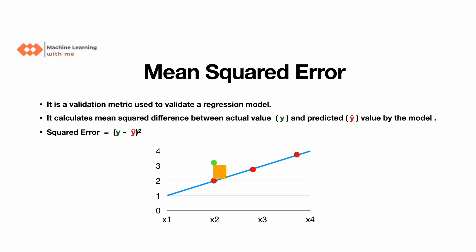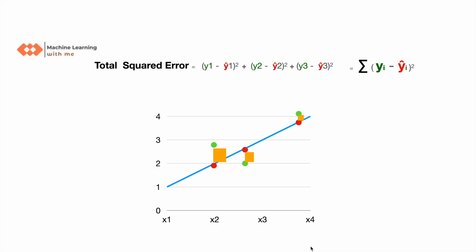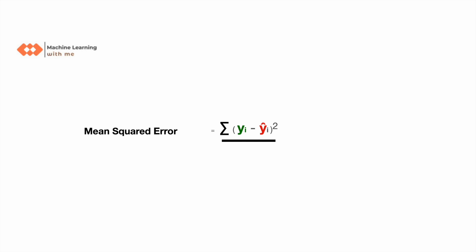That is the main difference between MAE and MSE. We find the squared error for the remaining points and add them all together to get the total squared error, which can be written mathematically as the summation of (yi minus y-cap) squared, where y-cap is the predicted value and yi is the actual value. Mean squared error is then the total squared error divided by the total number of data points n.